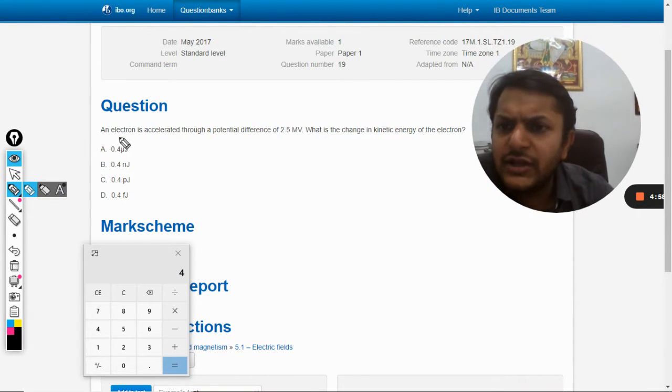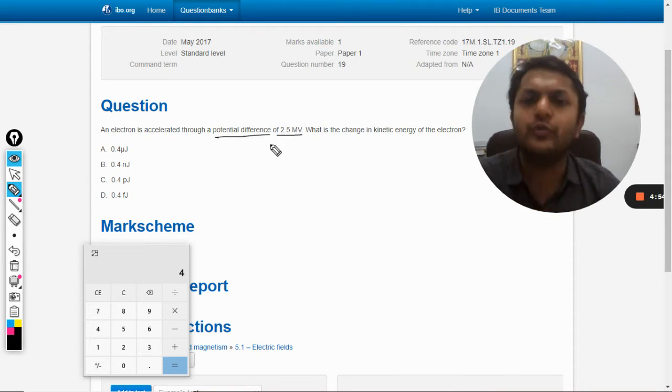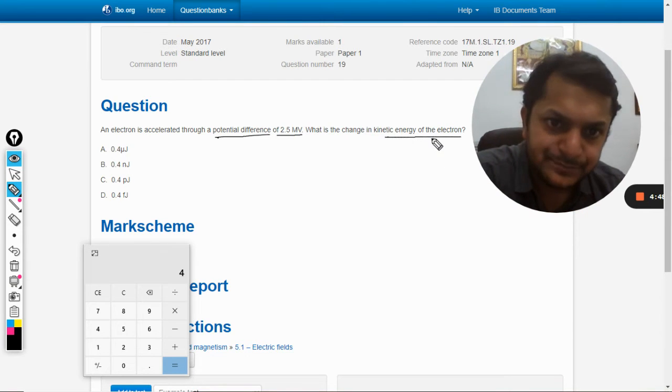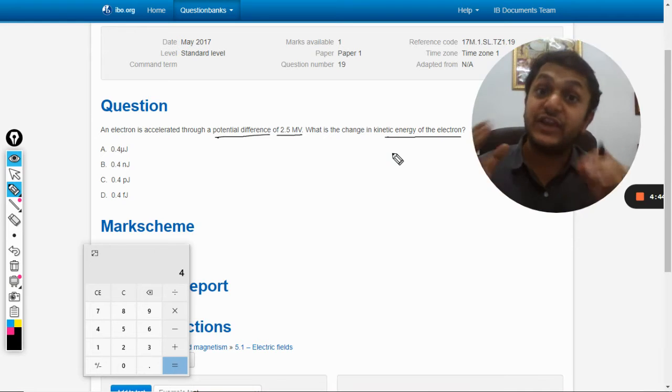Okay students, so in this question an electron is accelerated through a potential difference of 2.5 megavolts. What is the change in kinetic energy of the electron? This is a straightforward question and there is a straightforward formula.